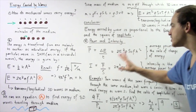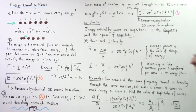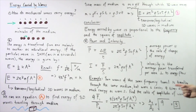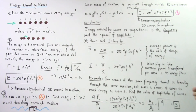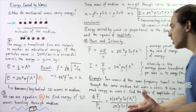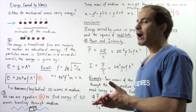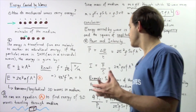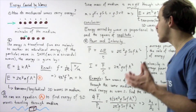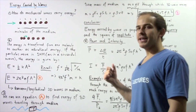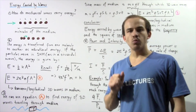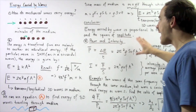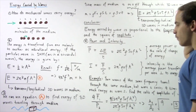Intensity is the average power transferred per area, where the area is perpendicular to the energy flow — perpendicular to the motion of the wave through which the energy is being transported. Now let's look at the following example using the power formula.